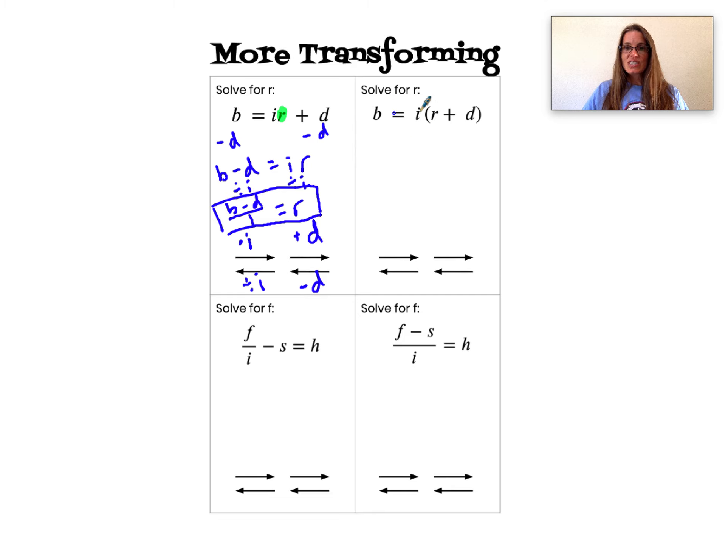In my next example, notice that I'm looking at the same variables and actually the same operations: adding d and multiplying by i. However, I'm doing this in a different order. First I'm adding d to r, and then I'm multiplying r plus d times i. Because of the parentheses, first I add d and then I multiply by i.